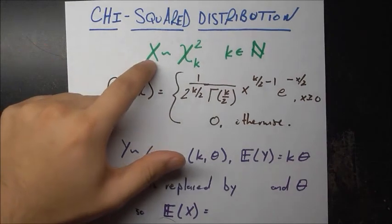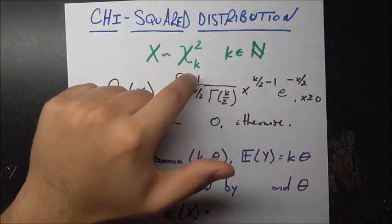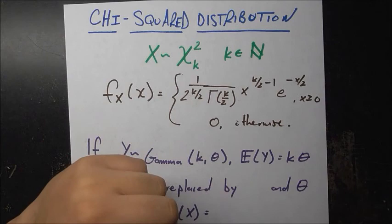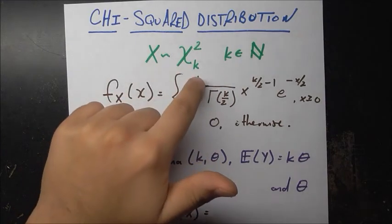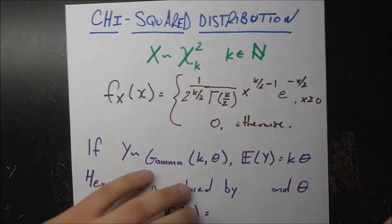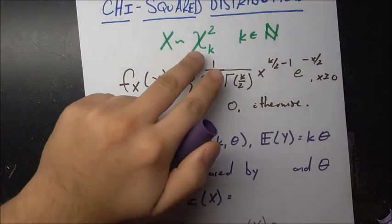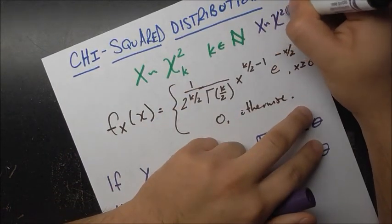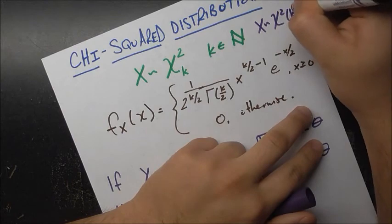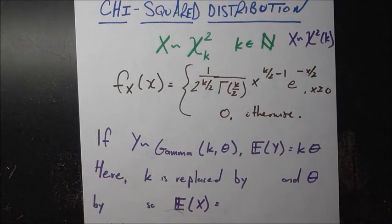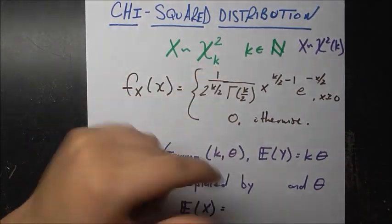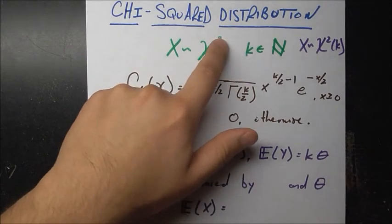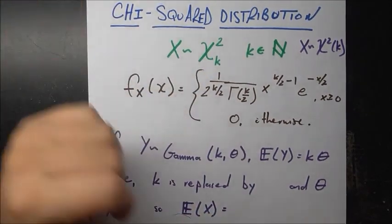We say that a random variable x is distributed as chi-squared with parameter k. This is a little bit different notation than you've been using. Usually we put the parameter, in this case k, in parentheses, and you can do that here too. But I've been taught to write it with k as a subscript, which is more compact, and chi-squared is the actual name of the distribution.